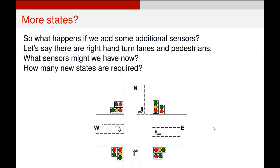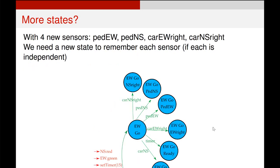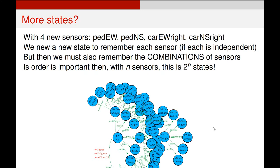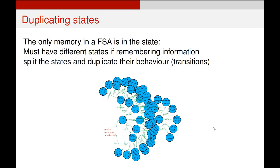Let's add some pedestrians and right-hand lanes onto our finite state machine. Now we have a bunch more sensors. We could transition into a variety of different states — in fact, up to six different states depending on what sensor is triggered when we are just in the east-west go state. If we need to remember which sensor has triggered and in which order, then each one of those states will also produce another six states coming off from them, and we rapidly end up with a massive mess of states just to remember all the sensors. Our finite state machine can become untenable because of the high number of states. We have to keep those duplicate states or we will lose our ability to remember information about the past states of the machine.